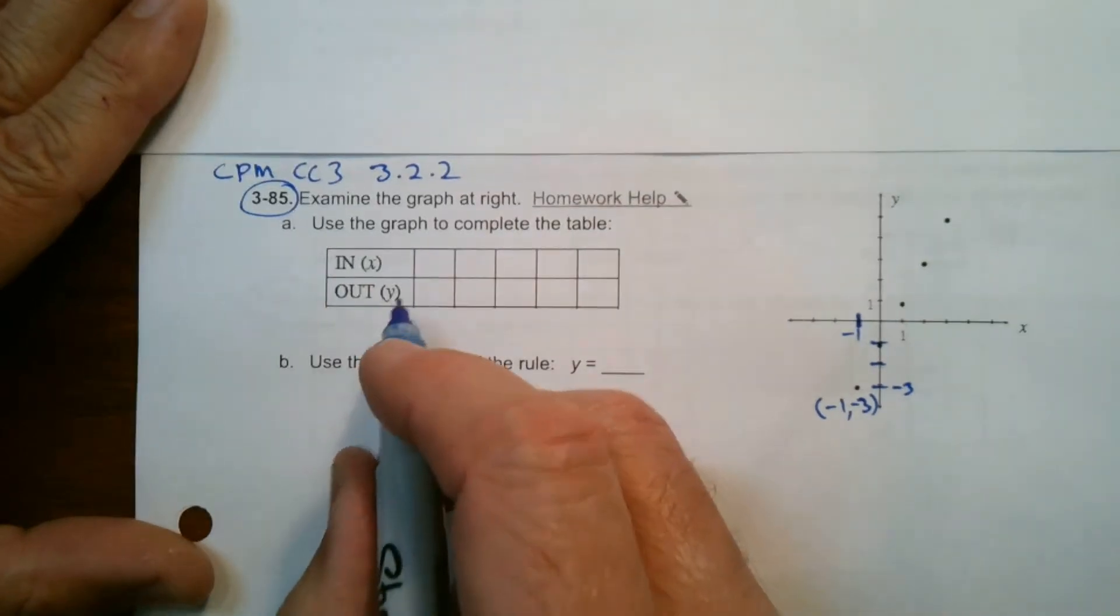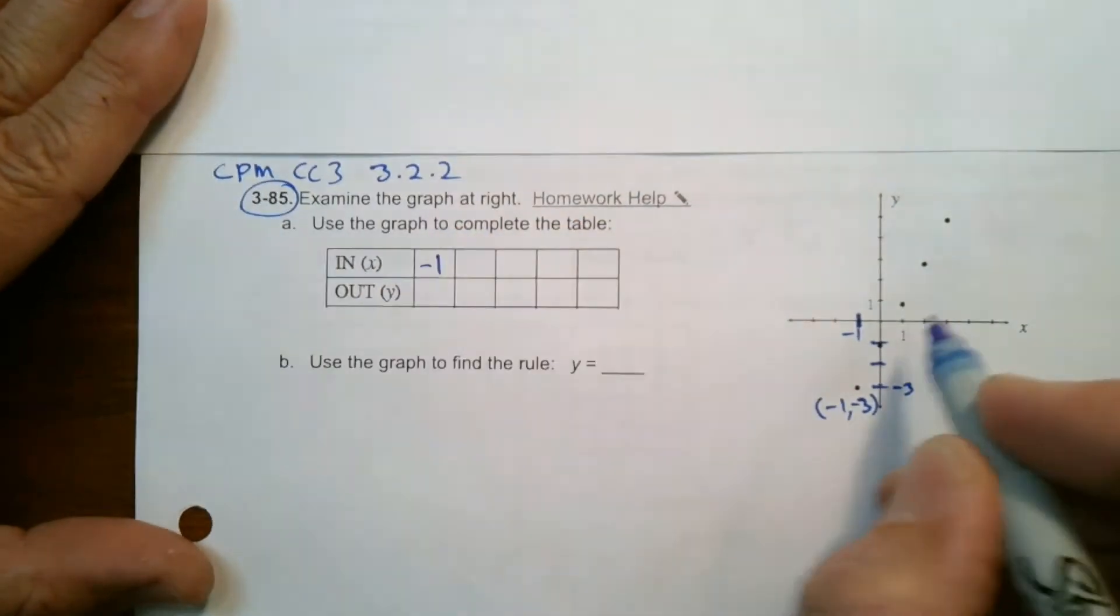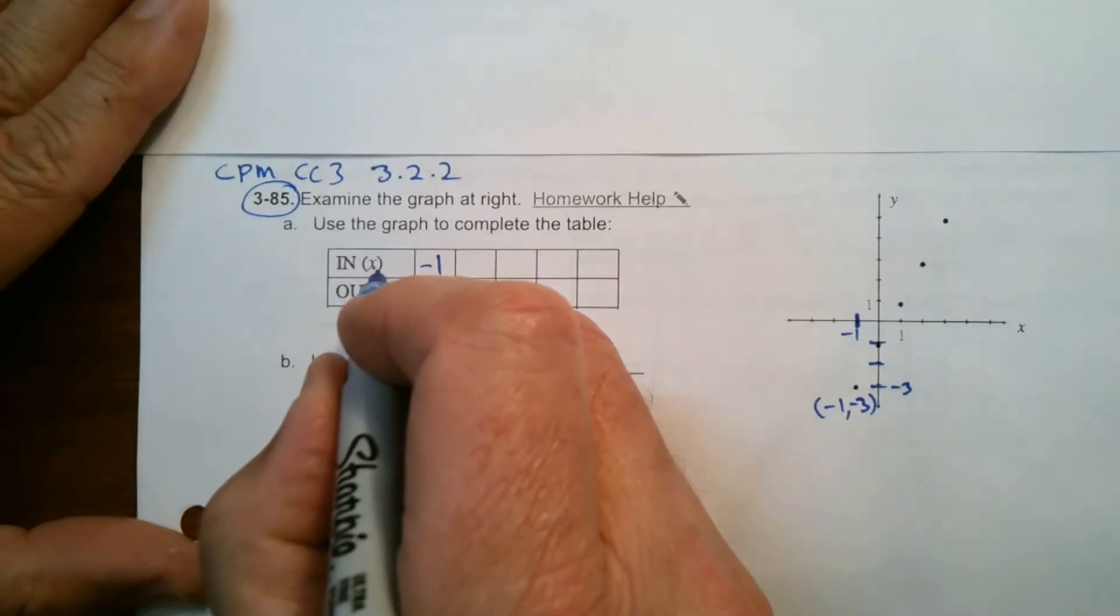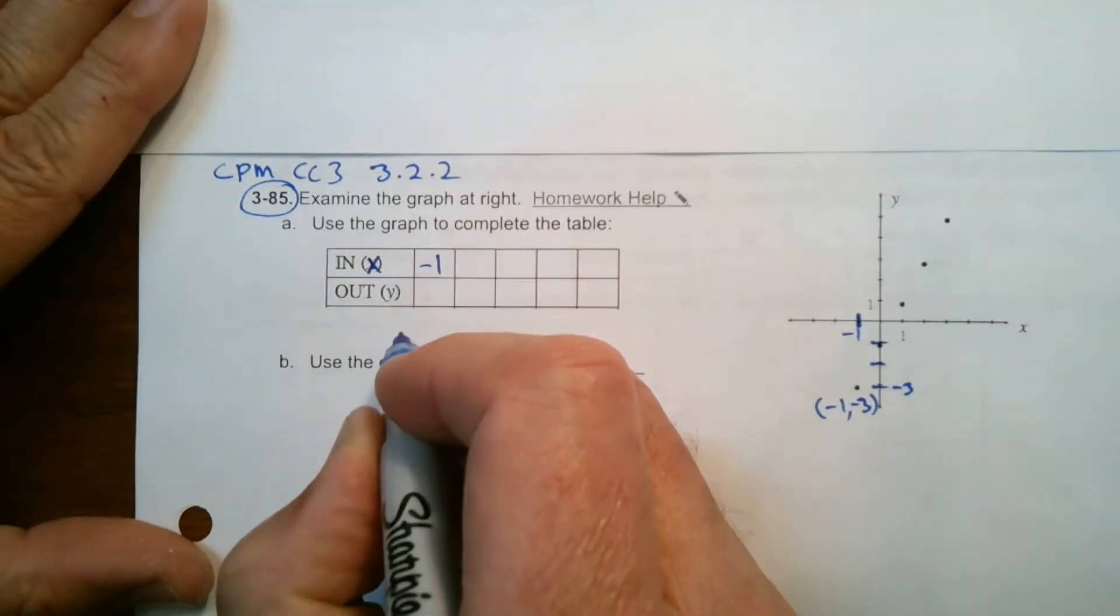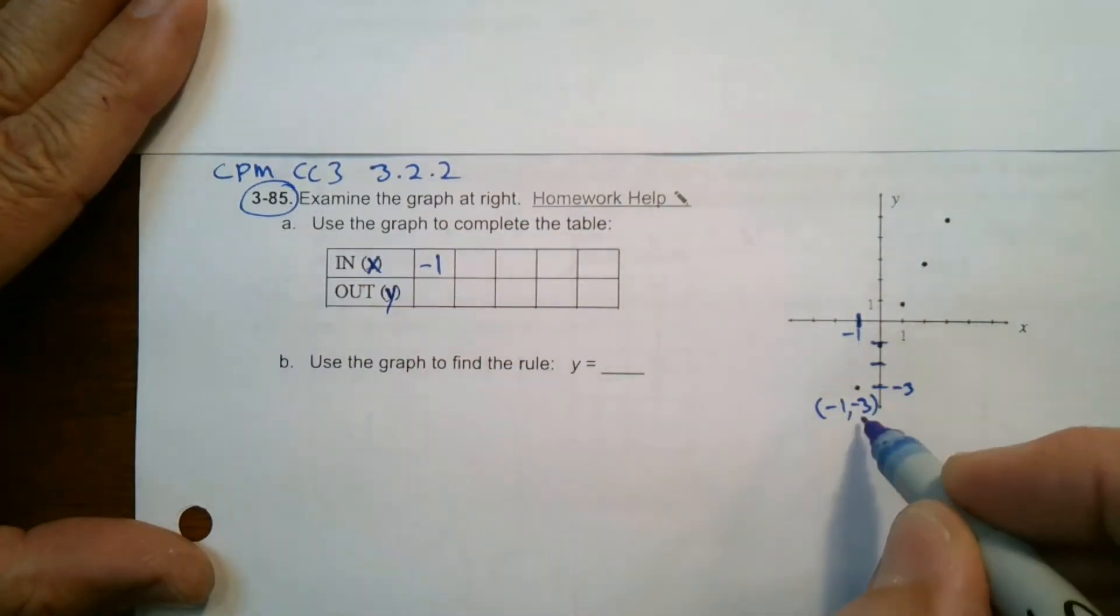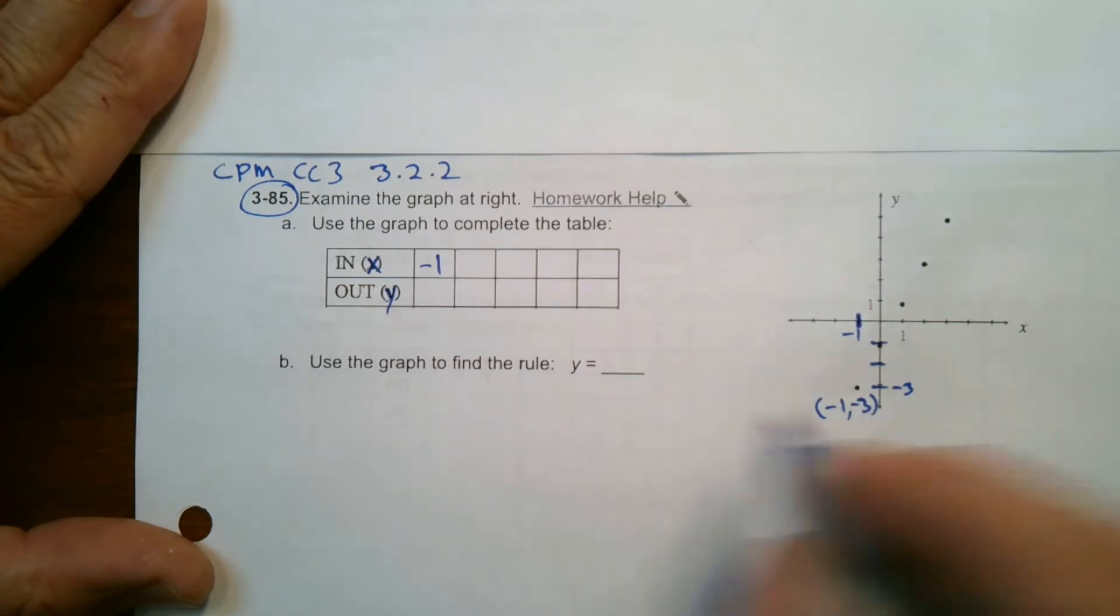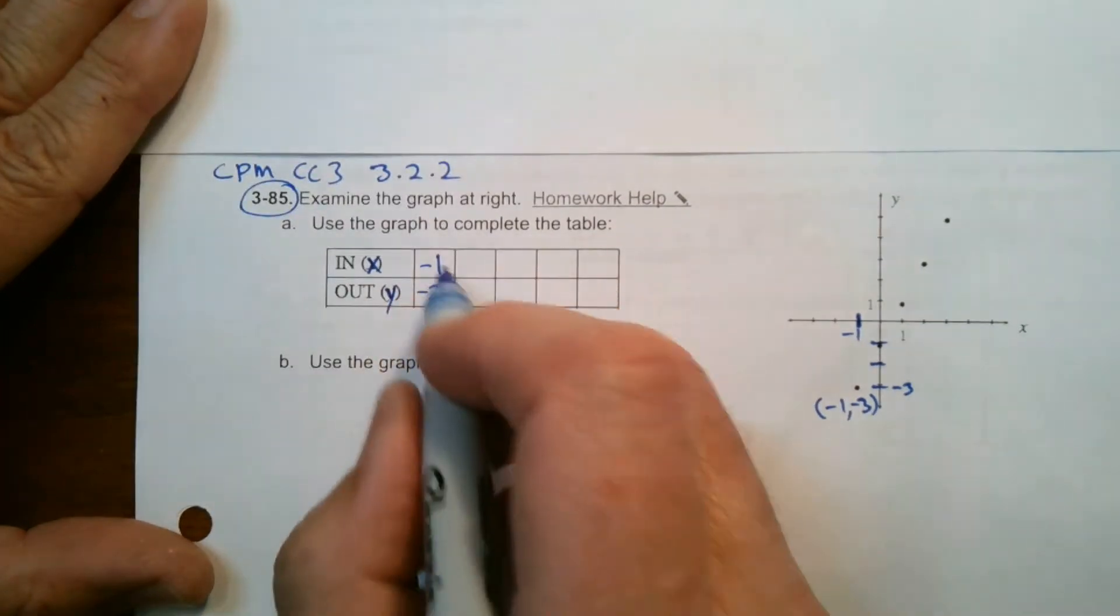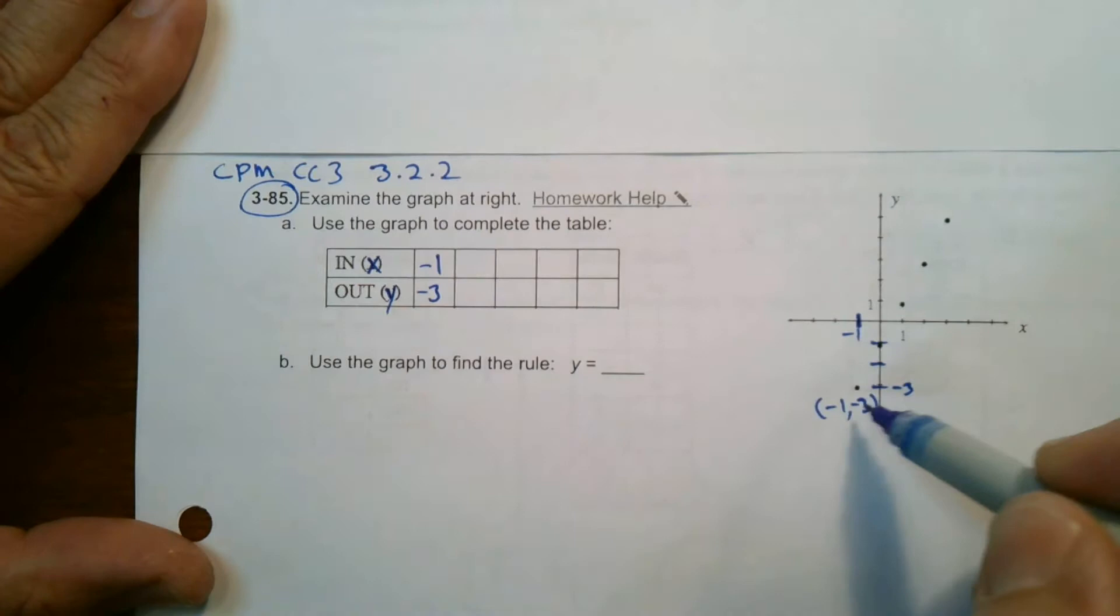So to add that to our table, the input is negative 1 because that's the X. The X is the input. That's my X and my Y is my output and my Y for this point is negative 3. So that's negative 1, negative 3 for that point right there.